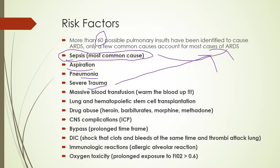Other risk factors include lung or hematopoietic stem cell transplant, drug abuse causing massive body inflammation, central nervous system complications like ICP issues. If you work in a neuro ICU where patients have high intracranial pressures, their body can be releasing chemotoxins and cellular mediators of inflammation that travel into the lungs and start attacking lung tissue, causing ARDS.